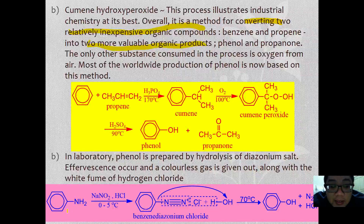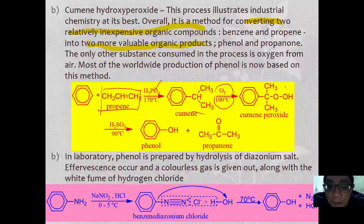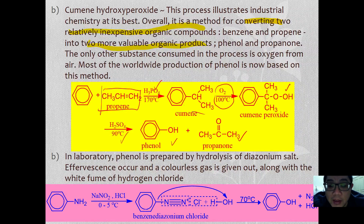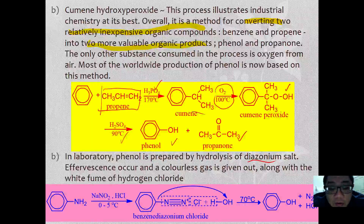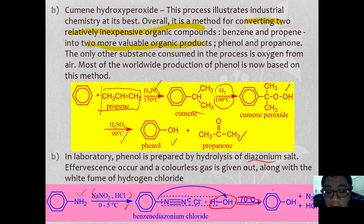The process works as follows: first, benzene reacts with propene catalyzed by phosphoric acid at 170 degrees Celsius to form cumene. The reaction continues when cumene reacts with oxygen under heat to form cumene peroxide. Finally, it is hydrolyzed using sulfuric acid to form phenol plus acetone. In the laboratory, phenol can also be prepared from the hydrolysis of the benzene diazonium salt. Aniline reacts with NaNO2 in HCl under cold conditions to form benzene diazonium chloride, which then hydrolyzes in water at 70 degrees Celsius to form phenol, releasing nitrogen gas as a side product.